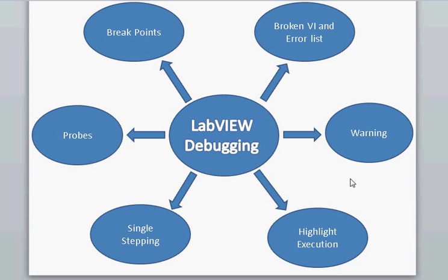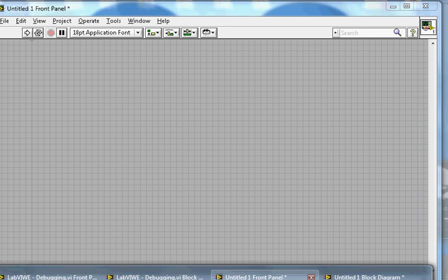This video is about LabVIEW debugging. When you work with your LabVIEW program or VI and have to debug your code, this video will show how to debug your program. There are six things you can do: look for the broken VI and error list, warnings, highlight execution, single stepping, probes, and breakpoints. I will show a demo of all six of them.